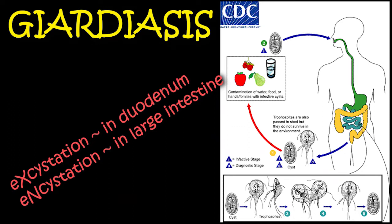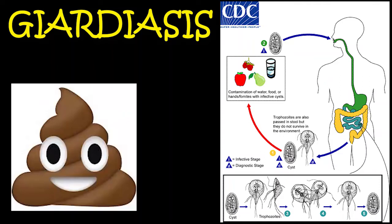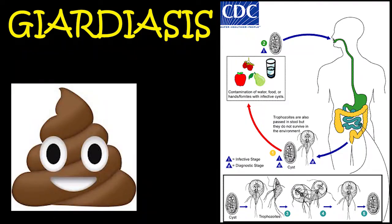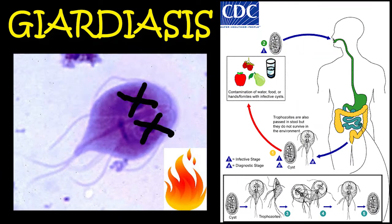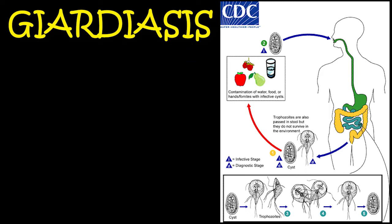When the environment becomes unfavorable, the trophozoites encyst in the large intestines. These cysts are passed in the feces and may remain viable for as long as three months in cold, fresh water, but do not tolerate heat and desiccation. Trophozoites usually disintegrate and die quickly on exposure to the external environment. Giardia lamblia only requires one host to complete its life cycle.